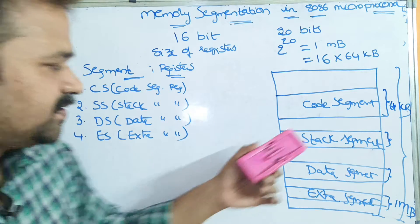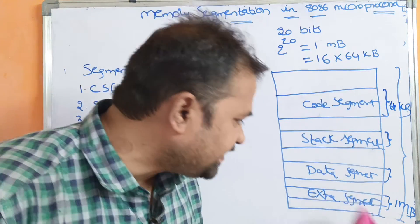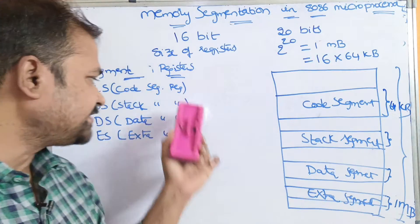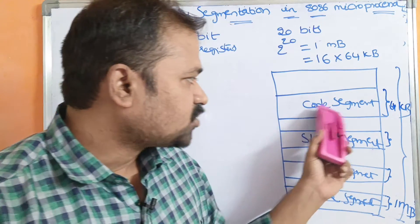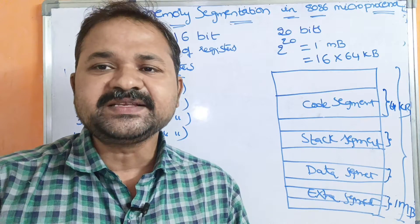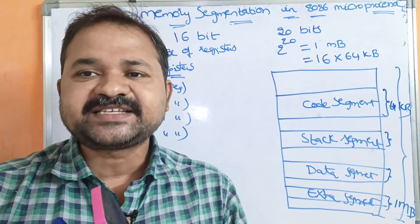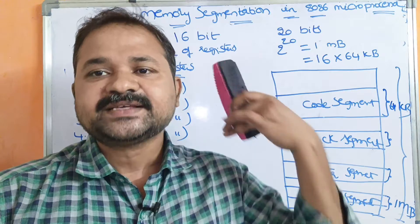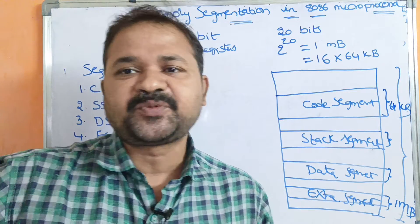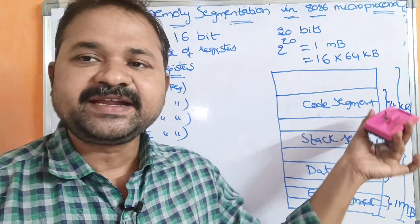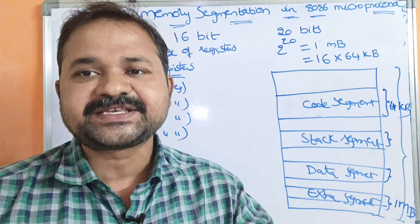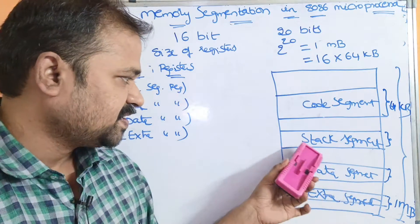Now let us see the advantages of these segments. The Code Segment Register mainly contains the code — that is, the program which is currently being executed by the CPU. For example, if the CPU is executing the first program, then the Code Segment contains that first program currently being executed by the CPU.